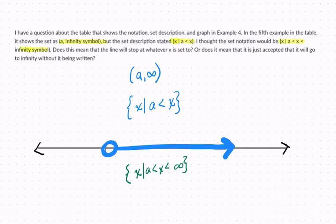And I can respond to that, I will. But then this really got me over here. They're saying, does this mean that the line will stop at whatever X is set to? Or does it mean that it is just accepted that it will go to infinity without it being written?